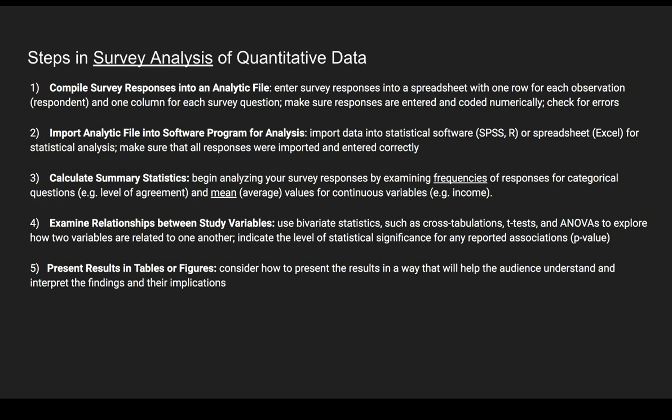The next step is to calculate what are called summary statistics. You want to begin analyzing your survey responses by looking at frequencies of responses for categorical questions. Frequencies are basically just counts — how many times did somebody respond a certain way across the different response categories? If you have Likert responses you might want to see how many people agreed versus strongly agreed or disagreed. If you have numerical data, you might want to look at the averages, median, or mode values for continuous variables, like income coded in a numerical format.